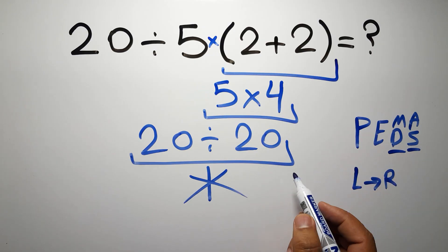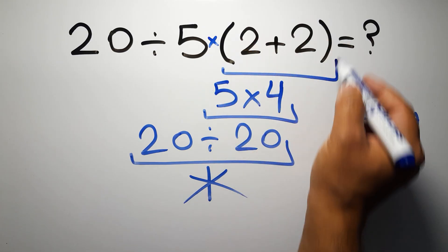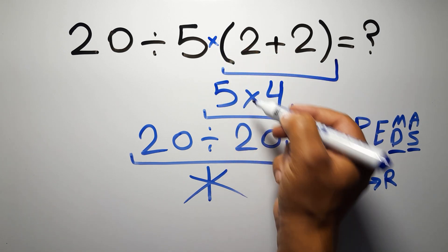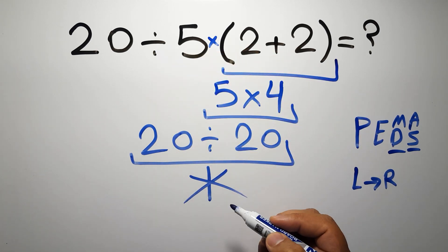Okay, so according to PEMDAS, first we have to do this parenthesis, then this division, and finally this multiplication. If we do this multiplication before this division, it is wrong.